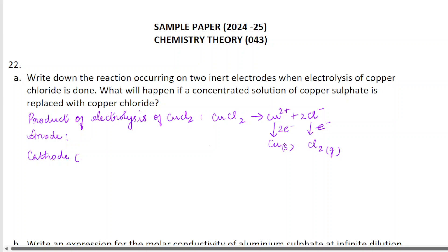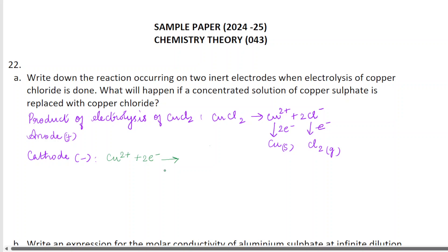So the cathode is the negative electrode and the anode is the positive electrode. At the cathode, Cu²⁺ gains electrons and Cu solid is deposited. At the anode, 2Cl⁻ loses 2 electrons and chlorine gas is liberated.